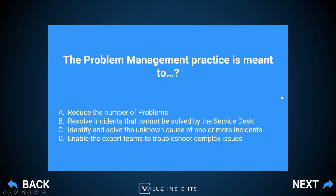Option B says resolve incidents that cannot be solved by the service desk — certainly not true, because that is still the incident management practice; it just involves second-level or expert teams. Option D says enable expert teams to troubleshoot complex issues — again not the case. We don't open a problem ticket just because an incident ticket gets too complex; we open problem tickets when we don't know what is causing the incident tickets.